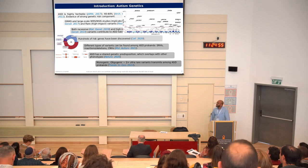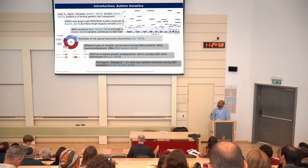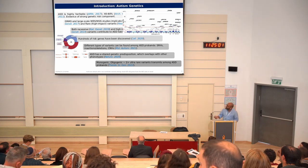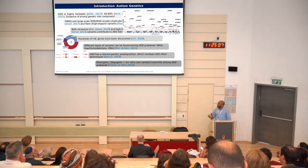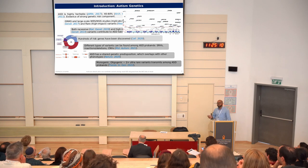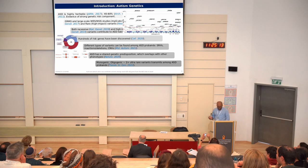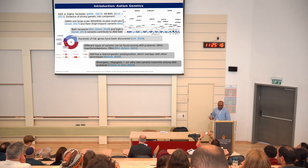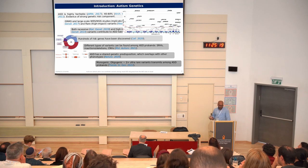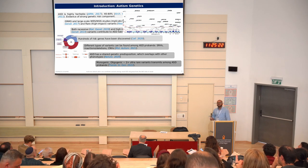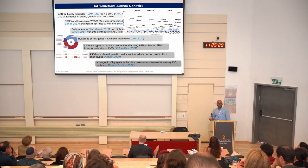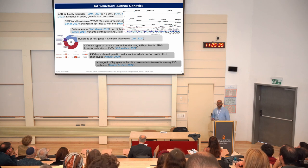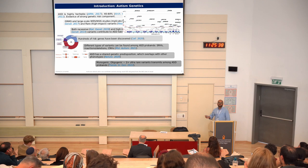Different types of variants can play some role in ASD predisposition. For example, single nucleotide variants involve a single nucleotide change in a specific position, and insertions and deletions are a chunk of DNA change in a specific position. ASD has a shared genetic predisposition overlapping with other phenotypes like schizophrenia, intellectual disability, and microcephaly. A recent study found an oligogenic architecture of autism, meaning two or more moderate to high-impact candidate variants may additively influence ASD.